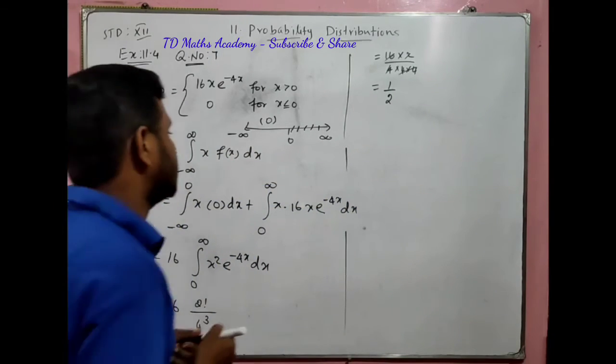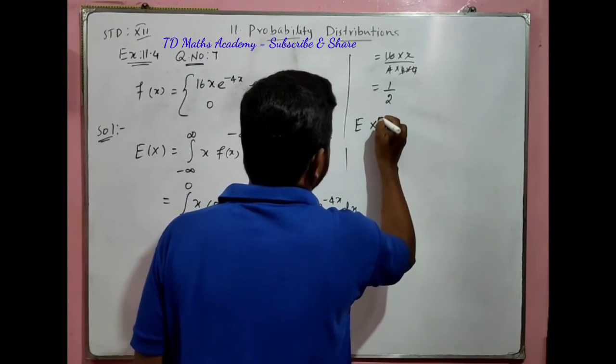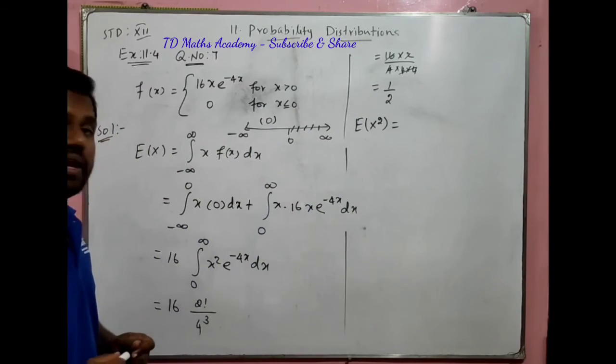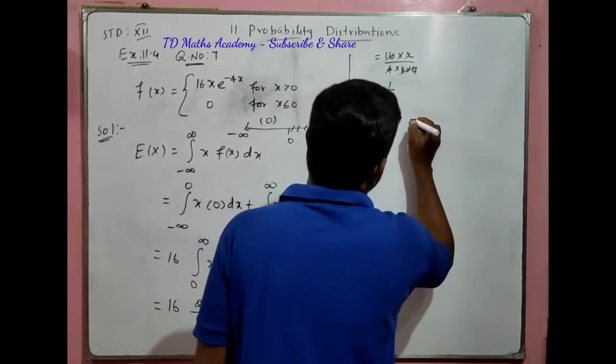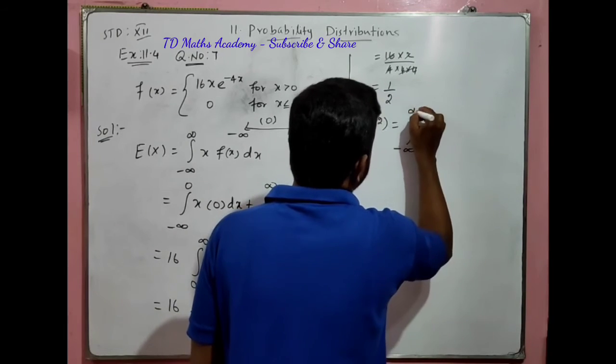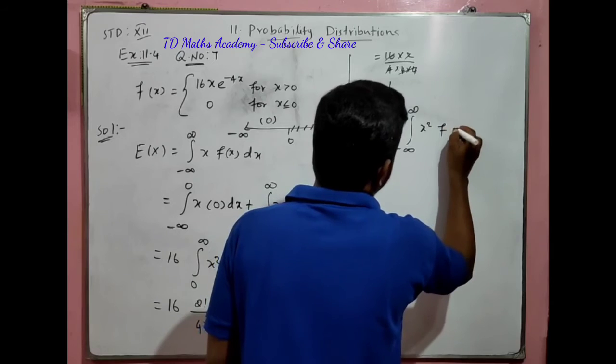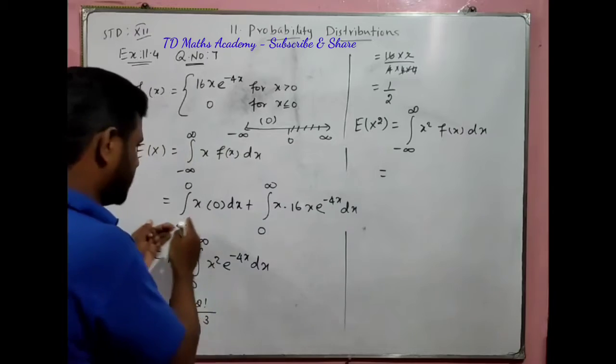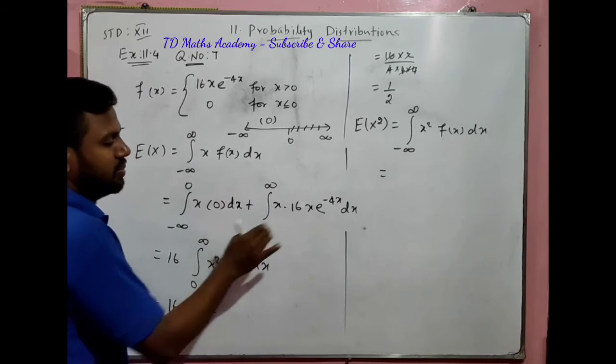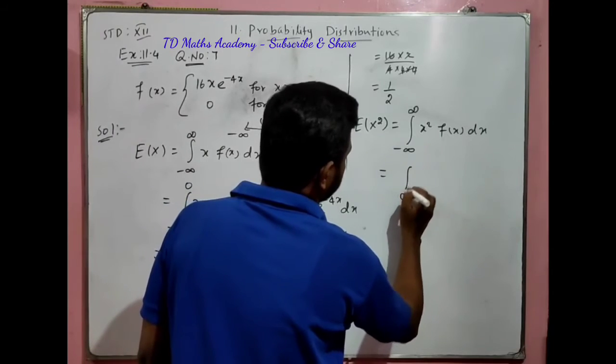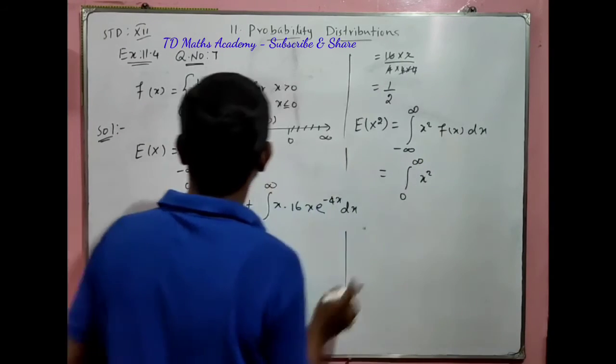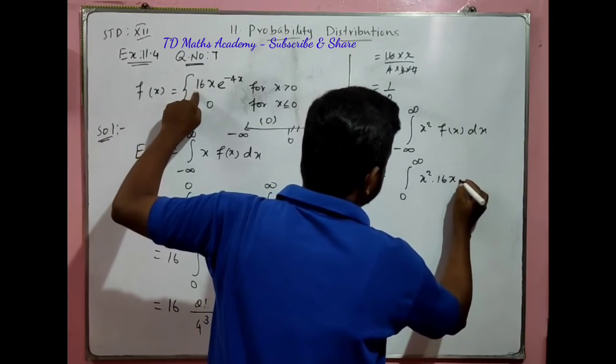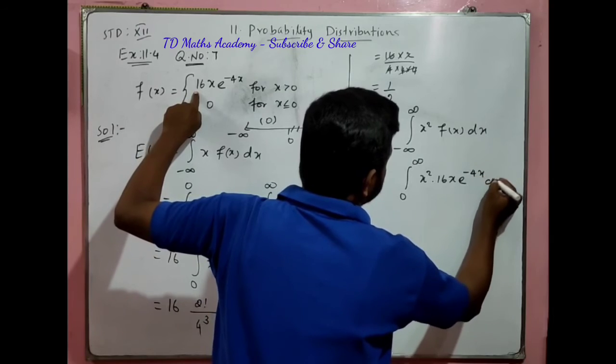Next, E(x²). E(x²) equals integration from minus infinity to plus infinity of x² times f(x) dx. From 0 to infinite, x² times f(x). What is f(x)? That is 16x e^(-4x) dx.